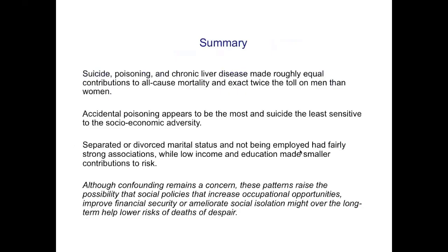To summarize: suicide, poisoning, and chronic liver disease make roughly equal contributions to mortality, and men are especially vulnerable. Accidental poisoning appears to be the most sensitive and suicide the least sensitive to markers of socioeconomic disadvantage. Separated and divorced adults, and unemployed individuals, are at especially high risk; and to a lesser extent, so are low-income people and those with less formal education. All of this provides support for the possibility that social policies aiming to improve occupational opportunities, financial security, educational attainment, and social isolation might have long-term benefits in lowering deaths of despair.